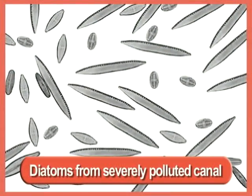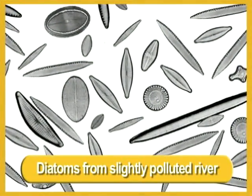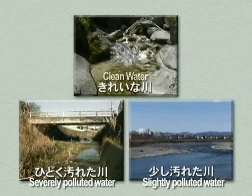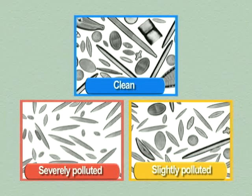First, we will look at the diatoms from the severely polluted water — their shapes are generally the same. In the slightly polluted river water, several shapes are present including oval and crescent. And finally, the clean water diatoms: in this water, a wide variety of sizes and shapes are found, meaning many different species of diatoms live there. From this experiment, we can see that water quality can be assessed according to the variety of diatoms that live there.